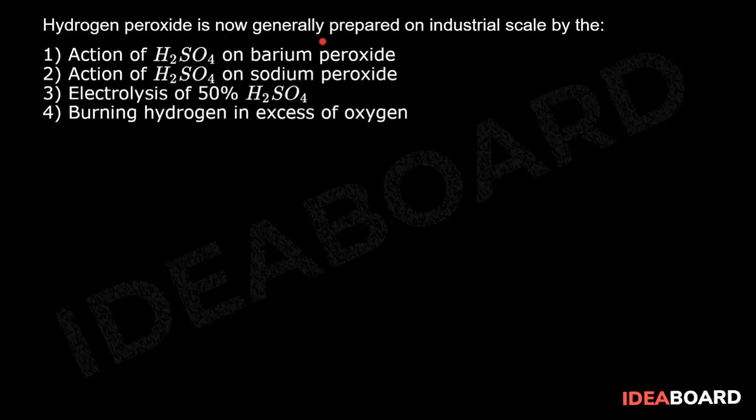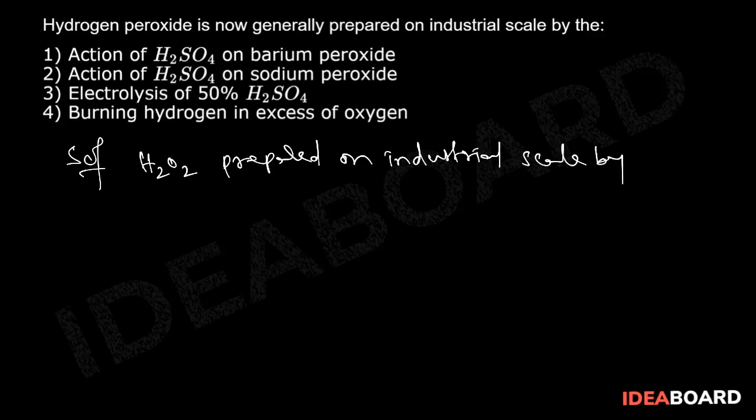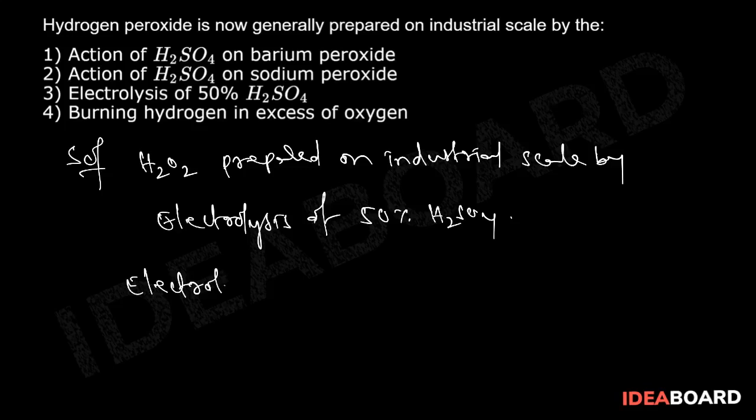Hydrogen peroxide is now generally prepared on industrial scale by electrolysis of 50% sulfuric acid. During electrolysis, sulfuric acid ionizes to give H+ ions plus HSO4- ions.